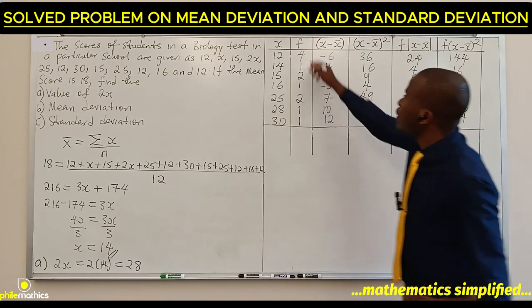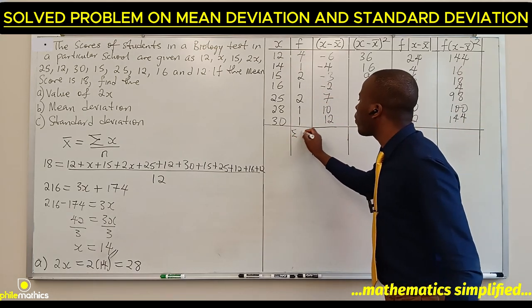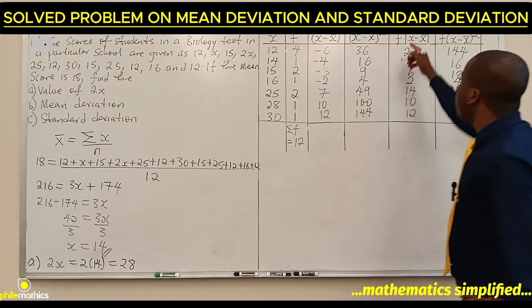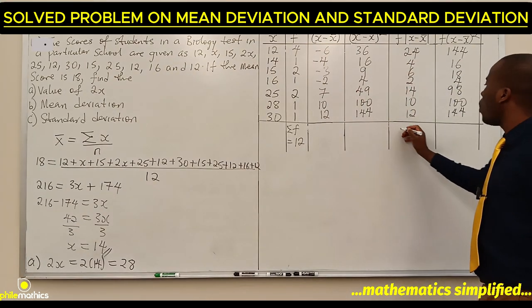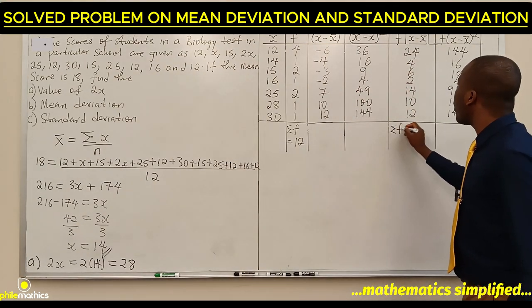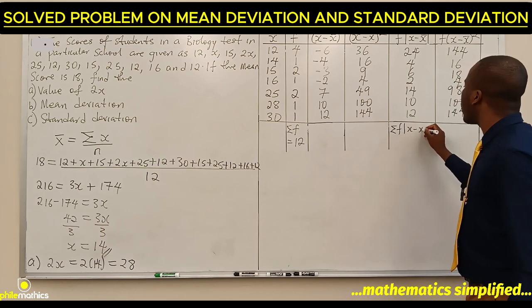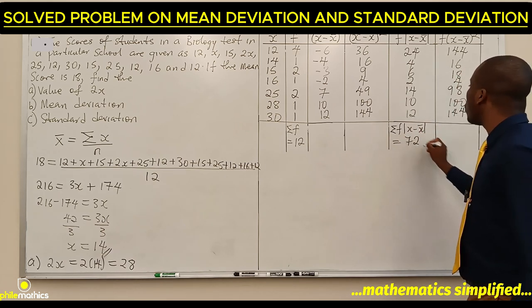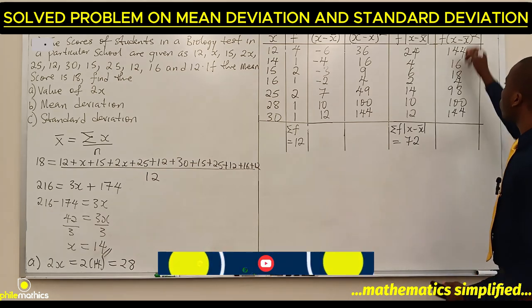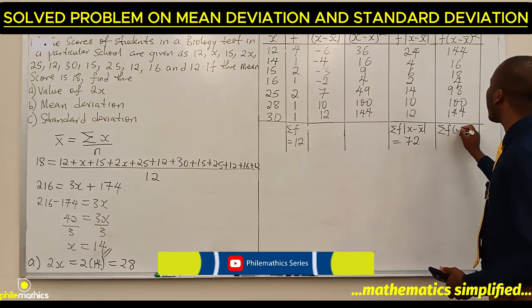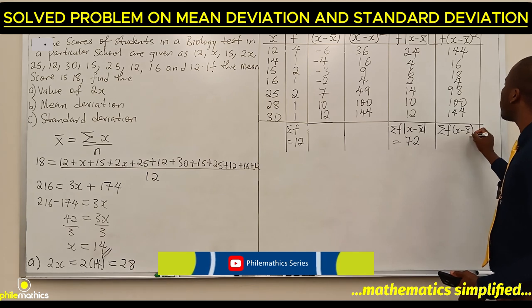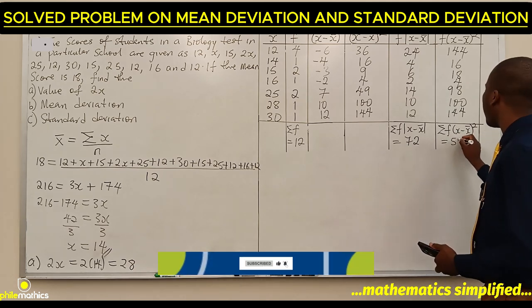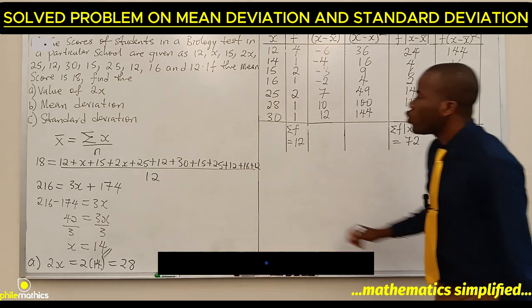Our summation of f is 12. If we sum this, we'll have sum of f times x minus x-bar, which is 72. And if we sum this, we'll have sum of f times x minus x-bar squared, which is 524.